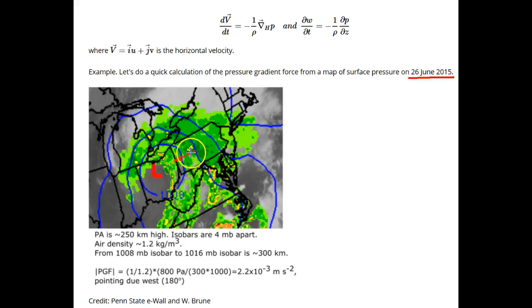Note that the pressure increases as x increases. But because the pressure gradient force is minus 1 over the density times the pressure gradient, the pressure gradient force—really the pressure gradient acceleration—is negative.